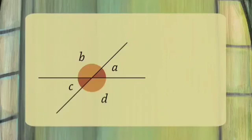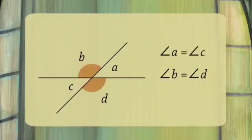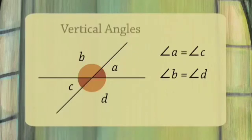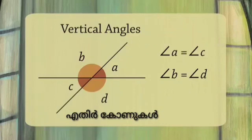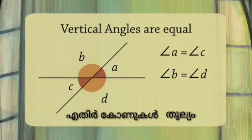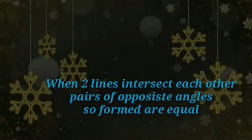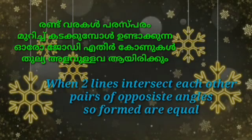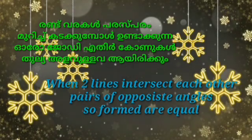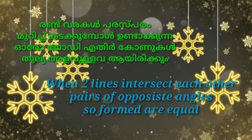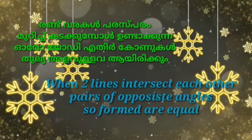A and C angles are equal; B and D angles are equal. A, B, C, D are marked as four angles. This is the property of Pairs of Vertically Opposite Angles.